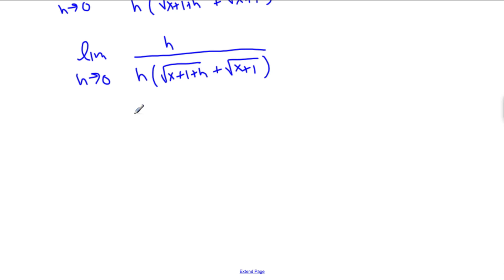And now we can cancel these h's. So then we have the limit as h approaches 0 of 1 over root x plus 1 plus h plus root x plus 1.